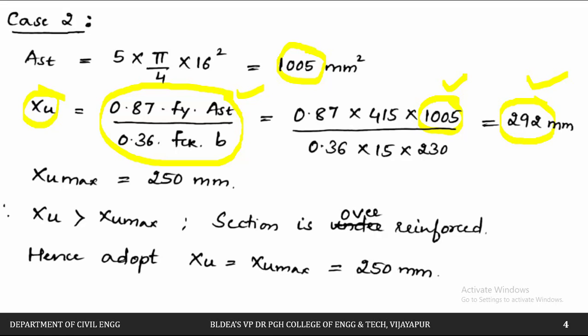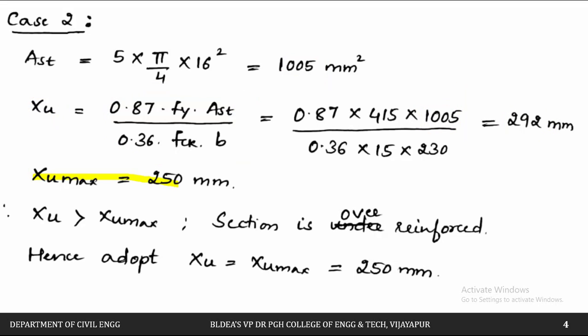XU = 292 mm, but XU max = 250 mm. Therefore XU is greater than XU max, which means the section is over-reinforced.